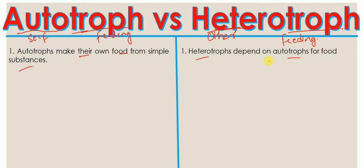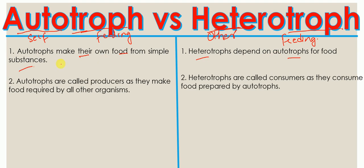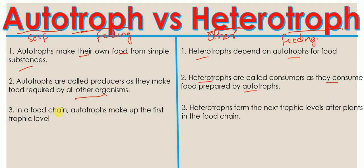The second difference is that since autotrophs make food, they are called producers — they make the food required by other organisms. Heterotrophs are called consumers because they consume food prepared by autotrophs. In a food chain, autotrophs occupy the first trophic level, whereas heterotrophs form the subsequent trophic levels after plants.